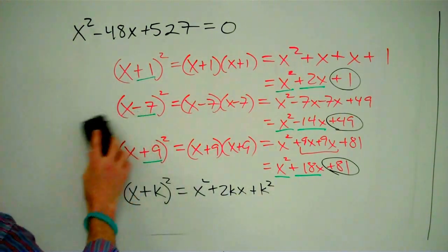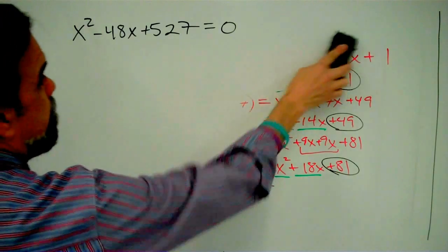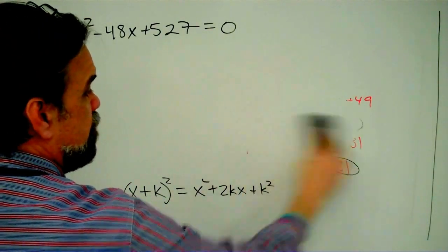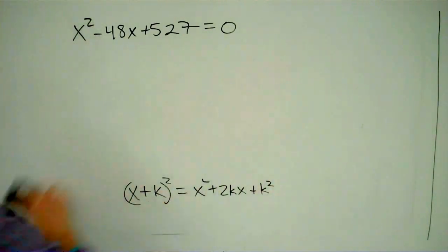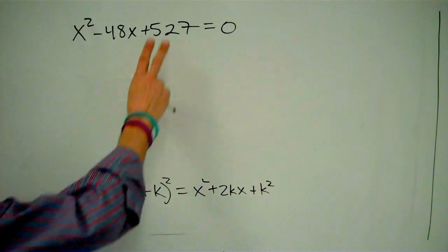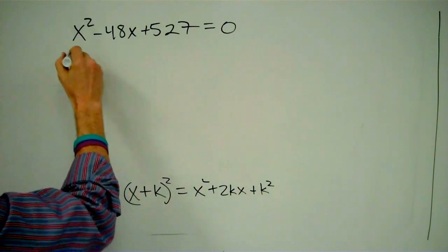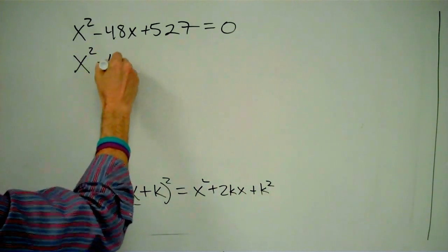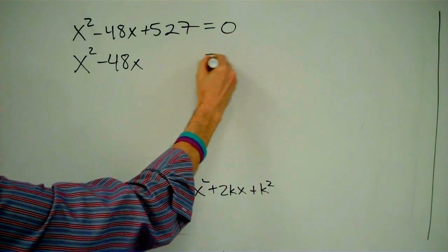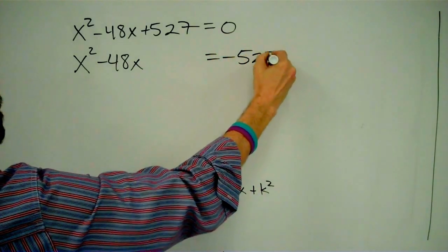As a matter of fact, I'm going to leave that written down there. So now, back to our problem. Step one, let's get that over there. Let's subtract 527 from both sides. So I have x² - 48x = -527.